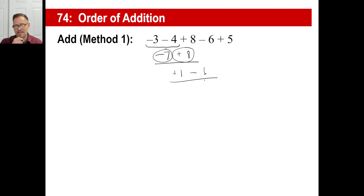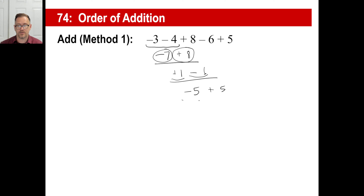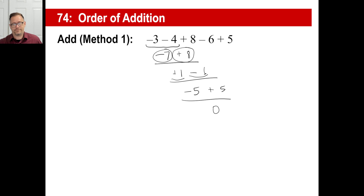Plus one minus six — I'm going to add, they're different signs — so I subtract the absolute values. Six minus one is five. Should I take a negative five or a positive five? That is farther away from zero — that's a negative. So negative five plus five — those are different signs — so we're going to take the absolute values and subtract them. Five minus five is zero. Nothing else to do — is it negative zero or positive zero? Let's quit right there.